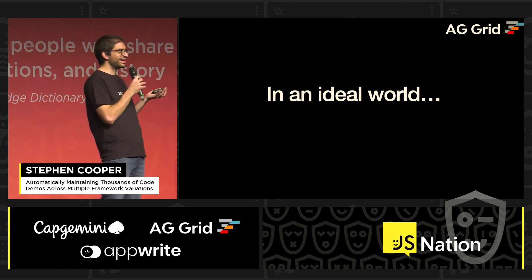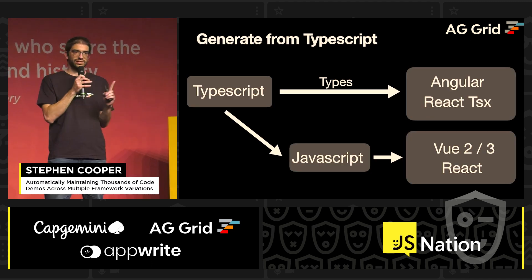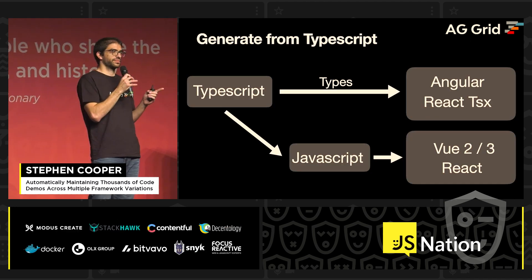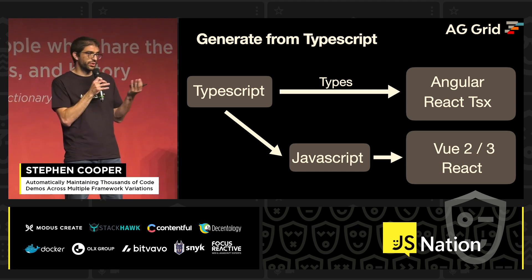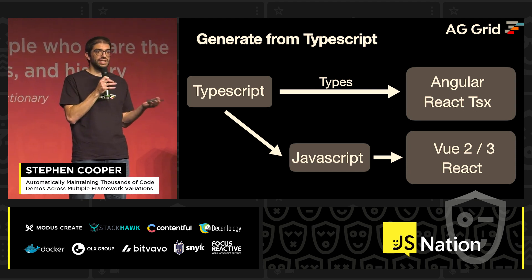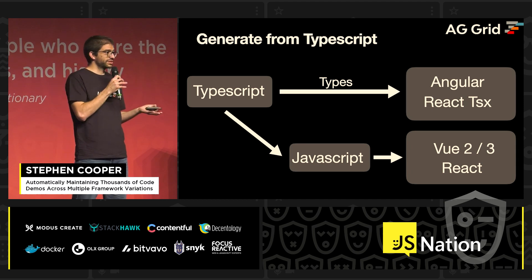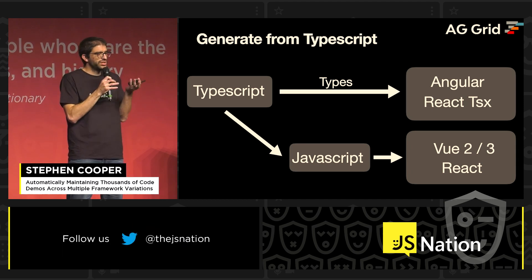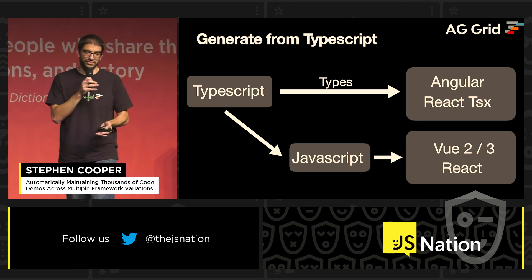In an ideal world, we want to write a single example in TypeScript — because Angular needs types, and React with TSX needs types. For our JavaScript example, we just strip the types out, and then we can use that as a starting point for Vue and React with plain JavaScript.